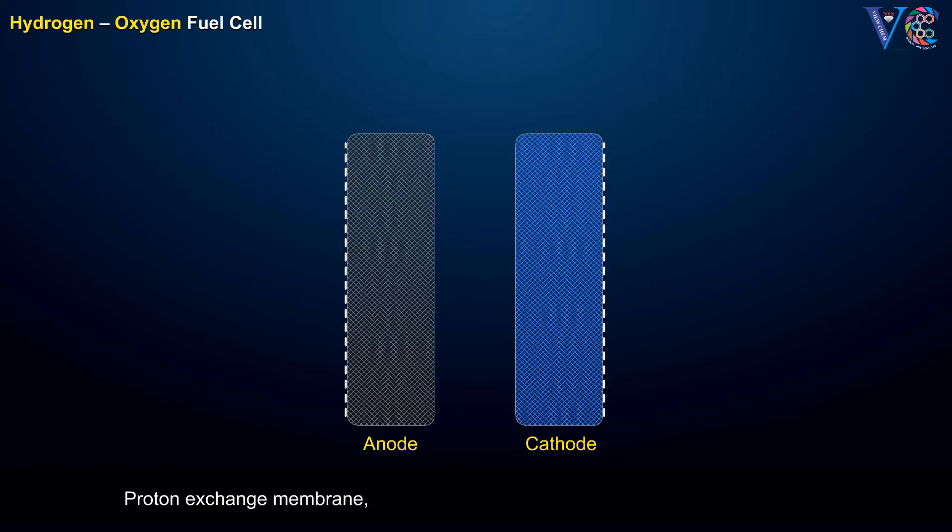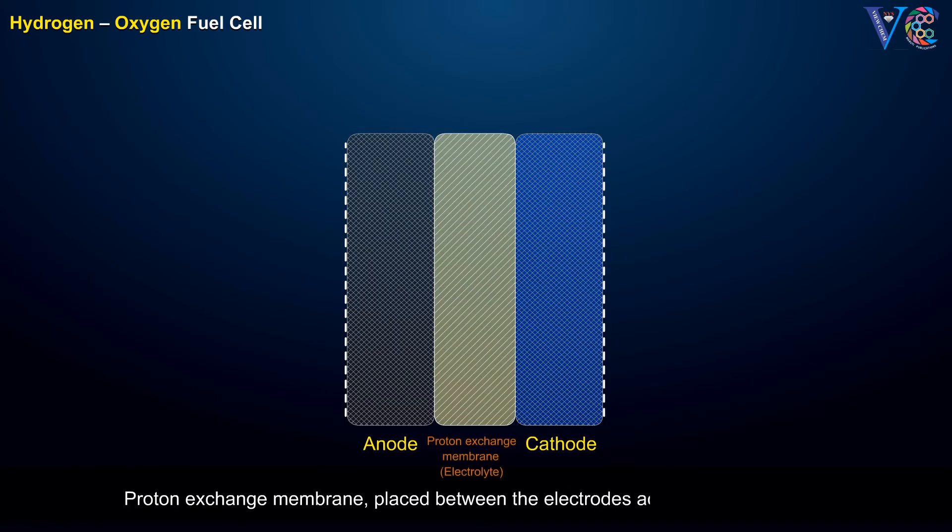A proton-exchange membrane placed between the electrodes acts as the electrolyte. The anode and cathode are connected through an external circuit.